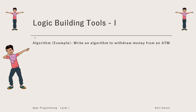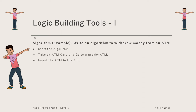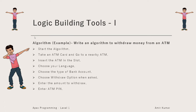Let's see how an algorithm looks. For example, if we have to write an algorithm to withdraw money from an ATM, it will look like this: Start the algorithm. Take an ATM card and go to a nearby ATM. Insert the ATM card in the slot. Choose your language. Choose the type of bank account. Choose the withdraw option. When asked, enter the amount to withdraw. Enter the ATM PIN. Collect the ATM card and cash. Stop the algorithm. The order of steps might differ by machine, but the overall logic remains the same.